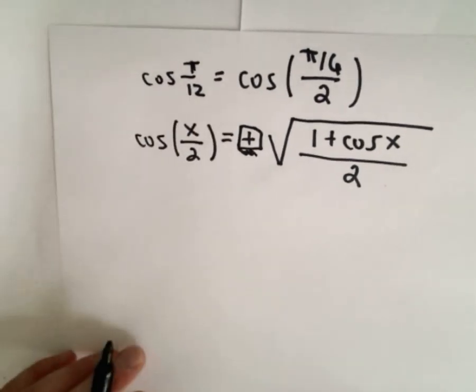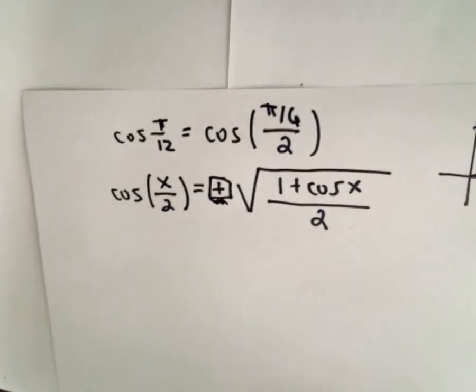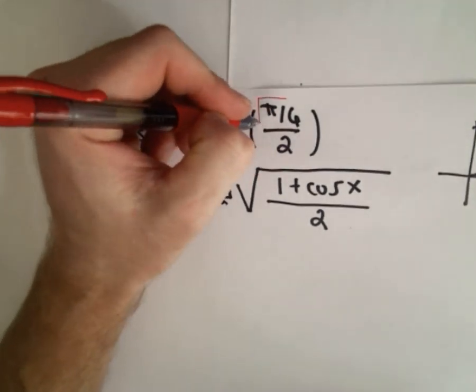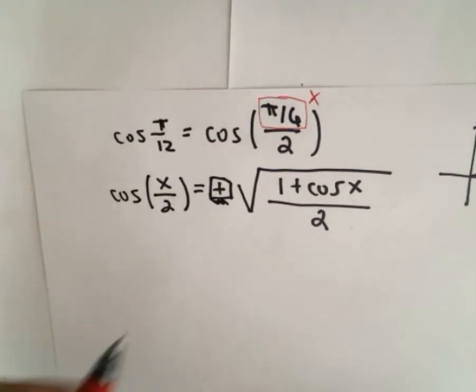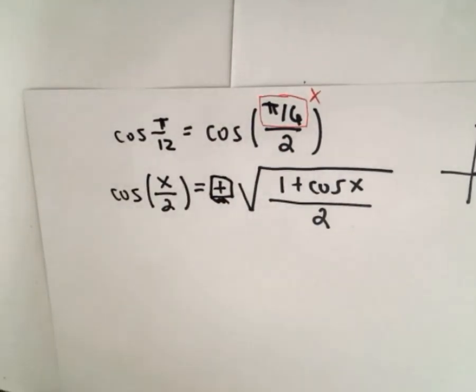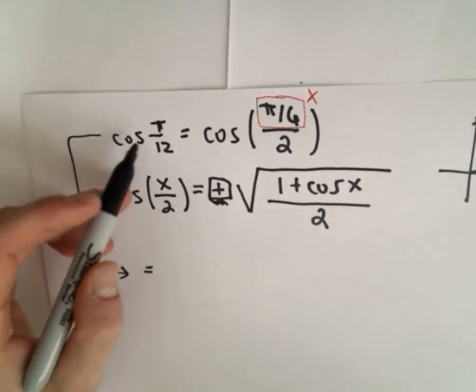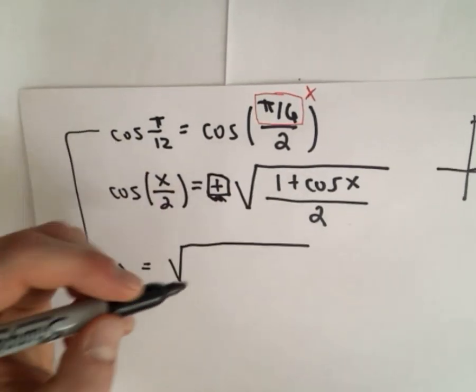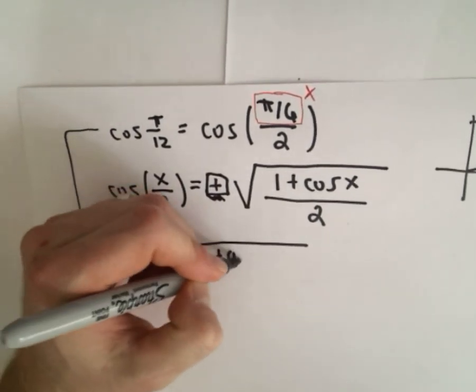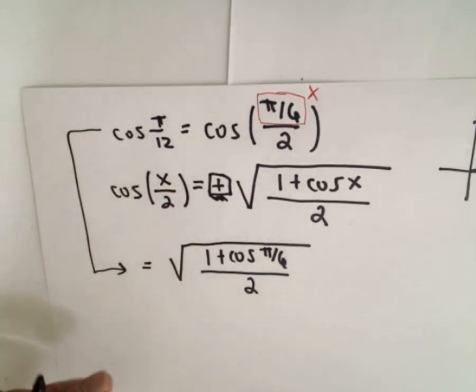So we'll forget about the negative on this part. And just like before, if you want to think about what's playing the role of x in this case, well, pi over six is going to be your value for x in this formula. So it says that cosine of pi over 12, which we wrote as cosine of pi over six divided by two, that's going to be the square root of one plus the cosine of pi over six, all divided by two.